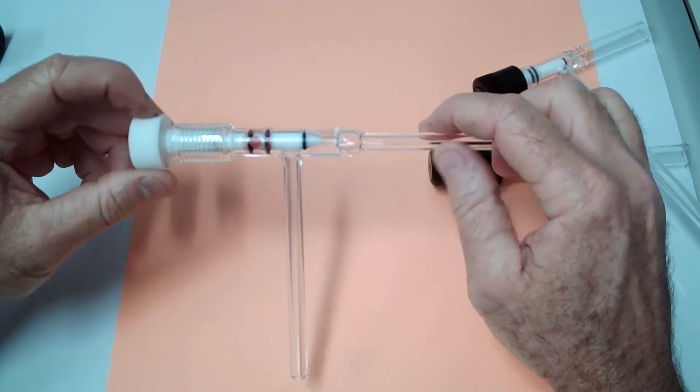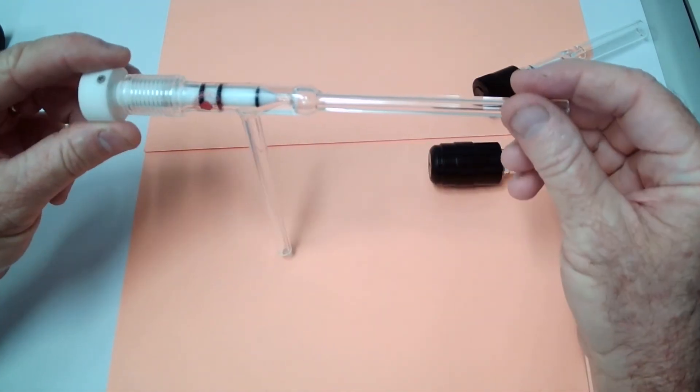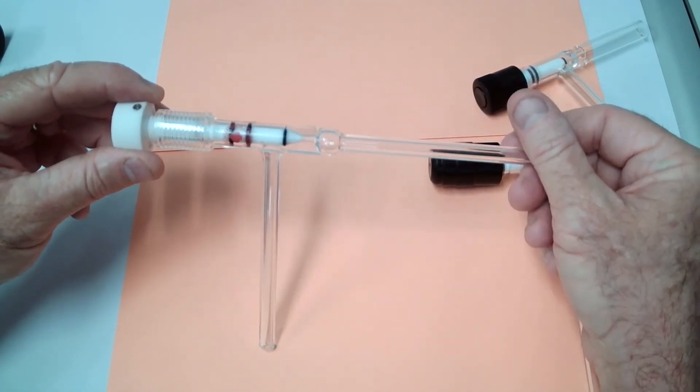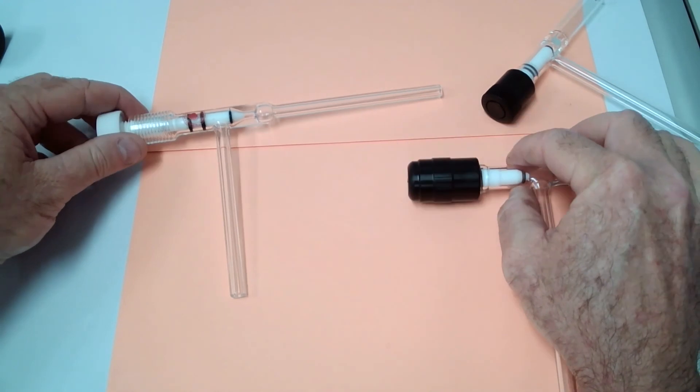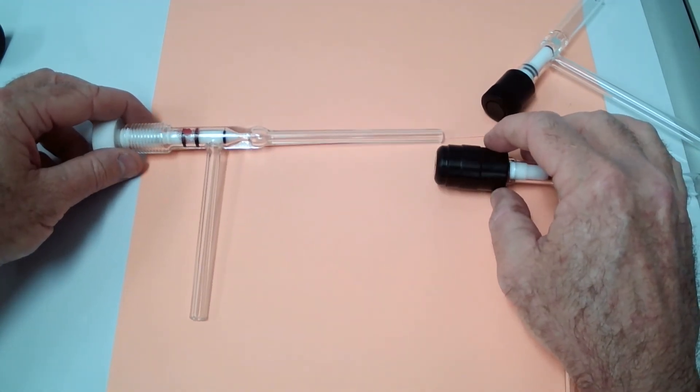They also make the plugs of different materials. This being all Teflon, which is a bakeable or autoclavable valve. These other ones have the plastic knobs which are not autoclavable.